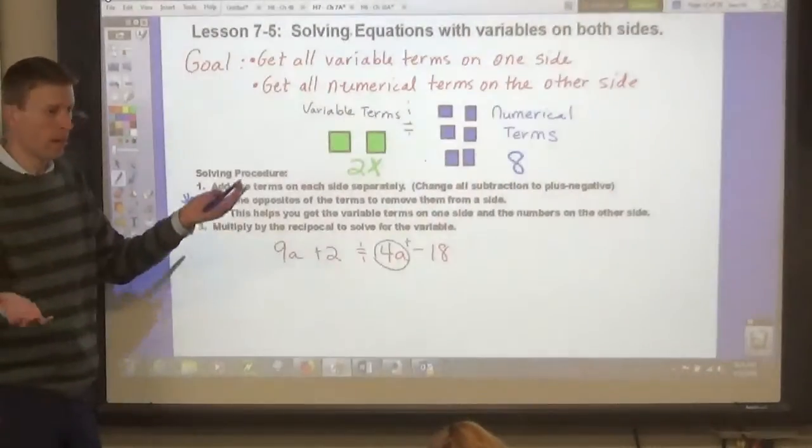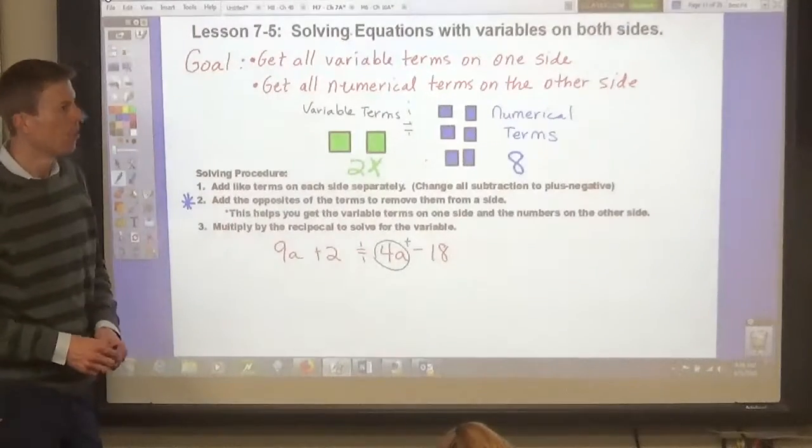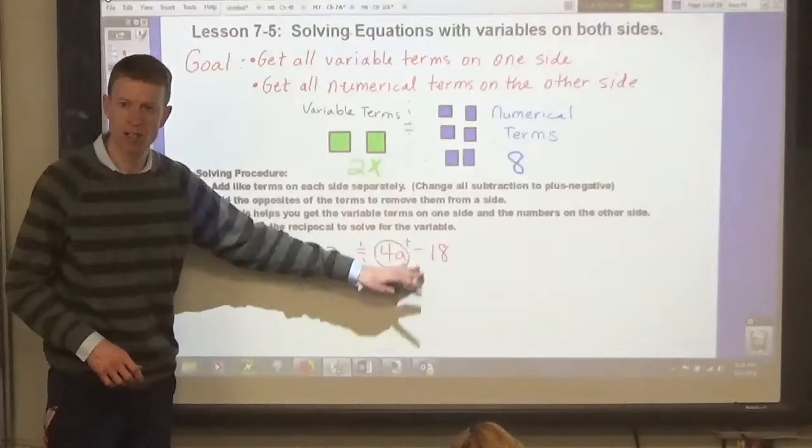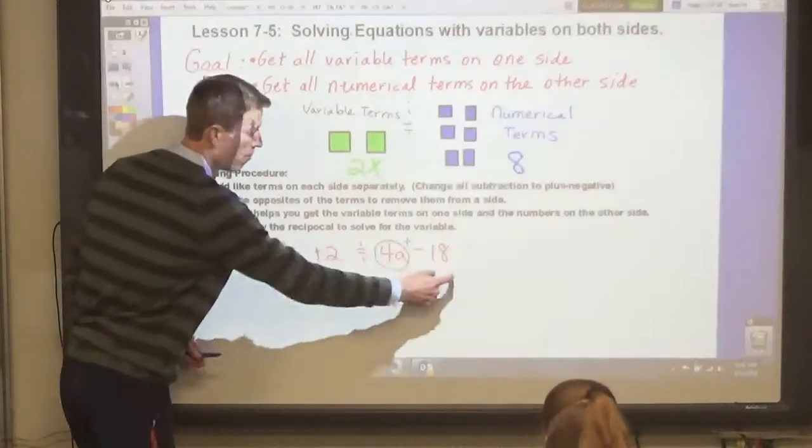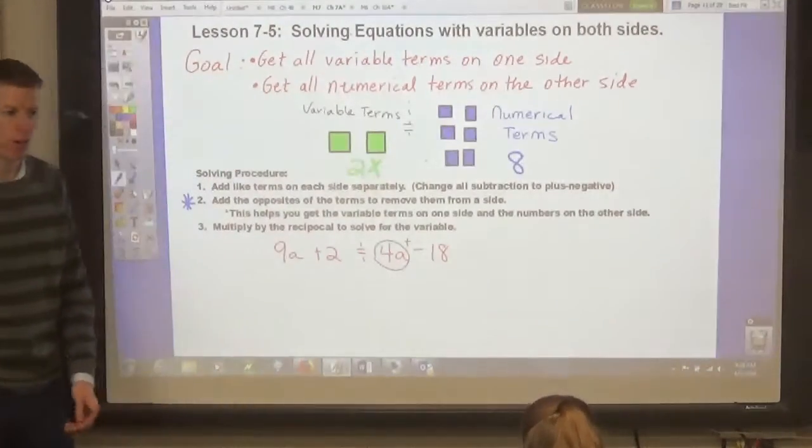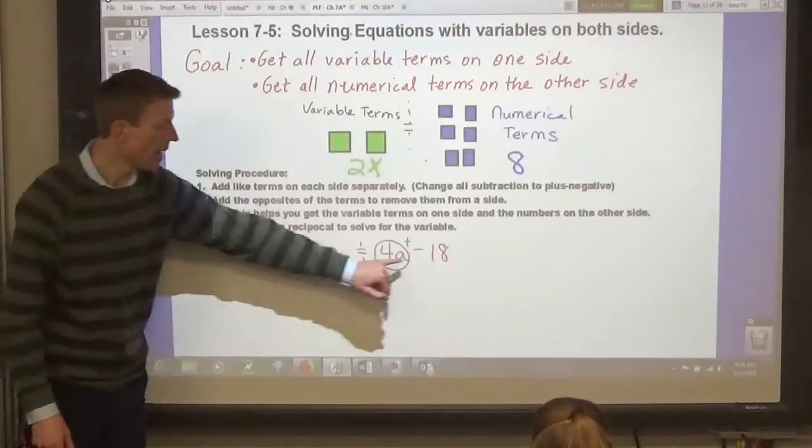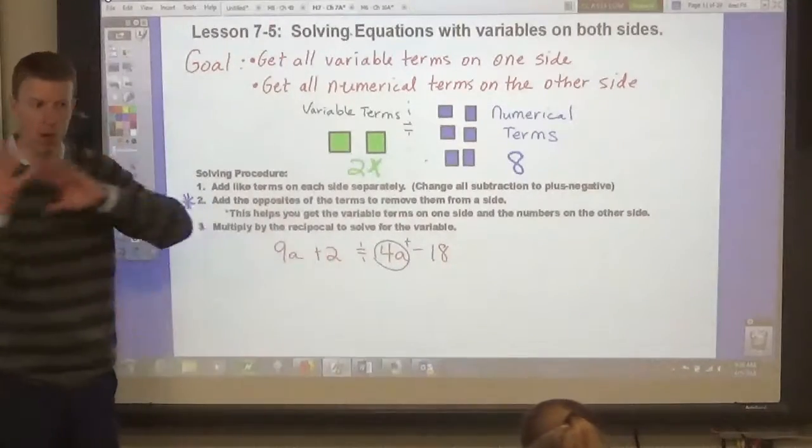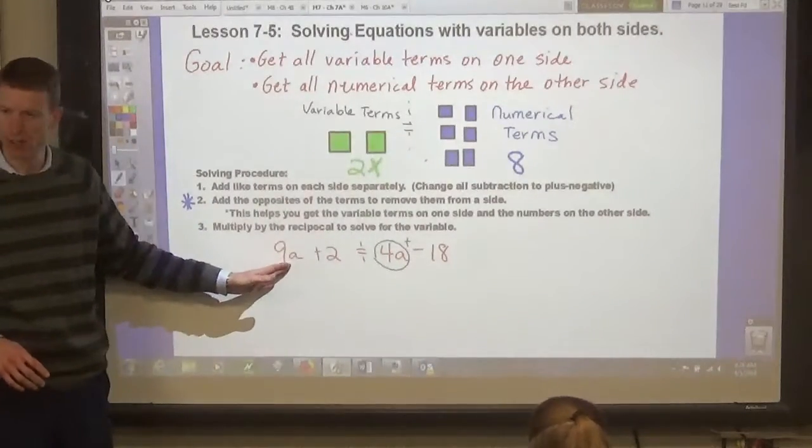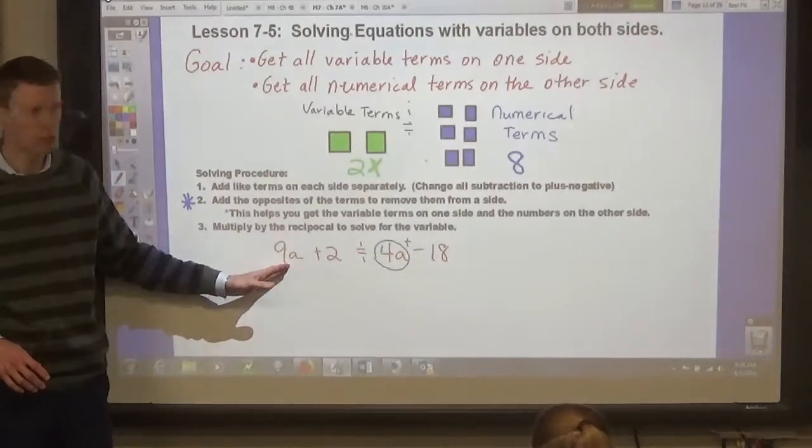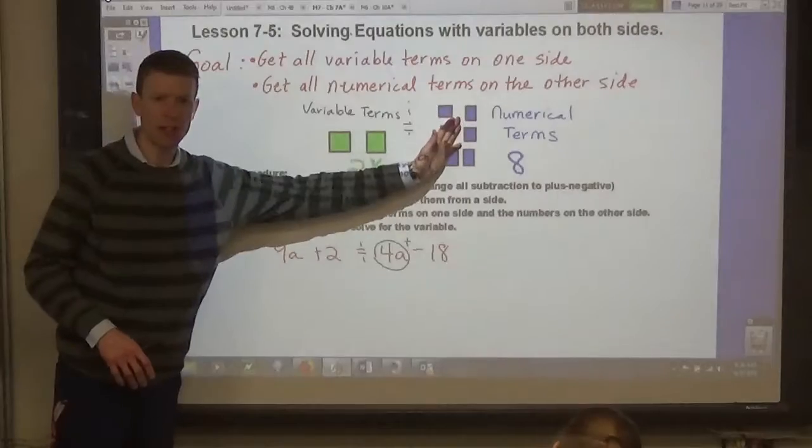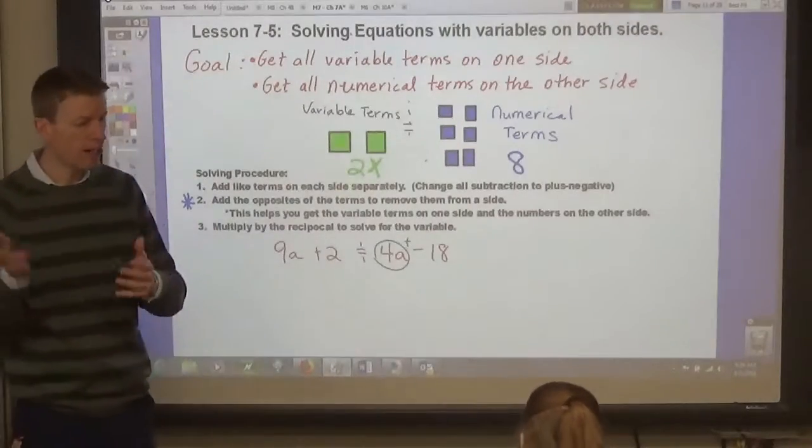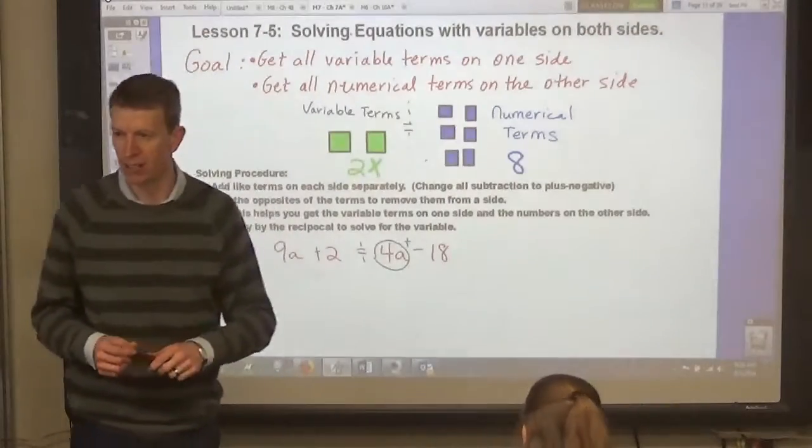So if you have variable terms on both sides, you're going to have to get rid of them on one side. So, if you've got numbers on both sides, which we've had before, you're going to add the opposite of those numbers to get them off of the side of the variable term. So that you've got variable terms on one side, numerical terms on the other side, and then you can multiply or divide to solve it.